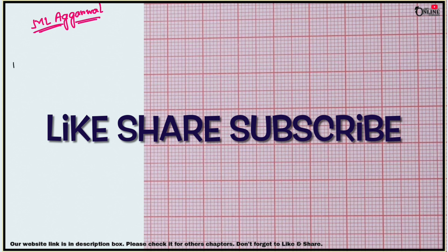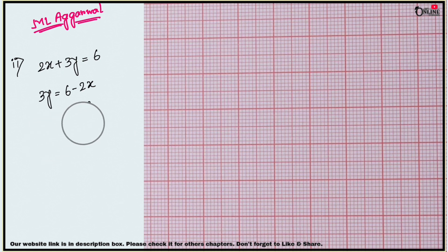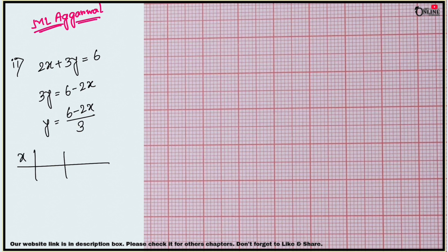Next, sub-question 3(ii): the equation is 2x + 3y = 6. Rearrange: 3y = 6 - 2x, so y = (6 - 2x)/3. Now make the table of values.